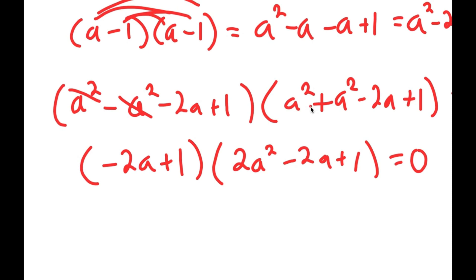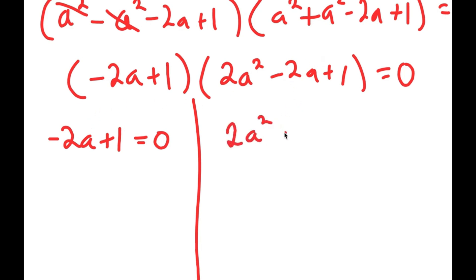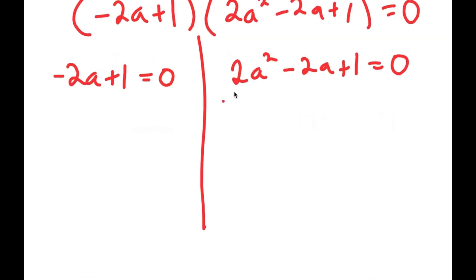From here, I'm going to divide this into two different equations. My first equation is negative 2a plus 1 is equal to 0, and my second equation is 2a squared minus 2a plus 1 is equal to 0. Because just one of these needs to be equal to 0 for the entire equation to equal 0. So now I'm going to solve each of these equations individually.